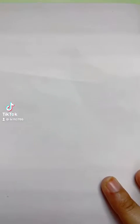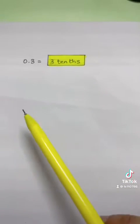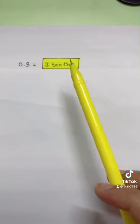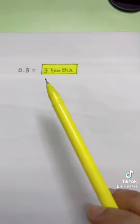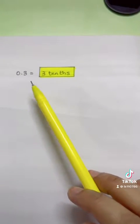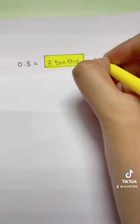How to properly read decimal numbers. Typically all of us read this as 0.3, but it is correctly read as three tenths, since the three is in the tenths place after the decimal and can be rewritten as three tenths.